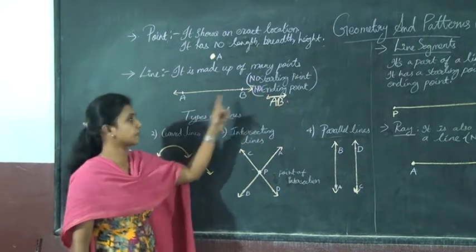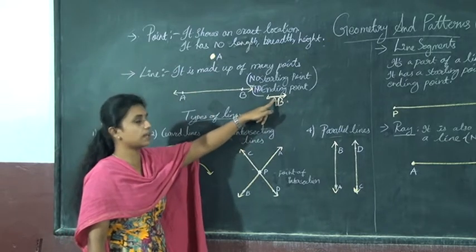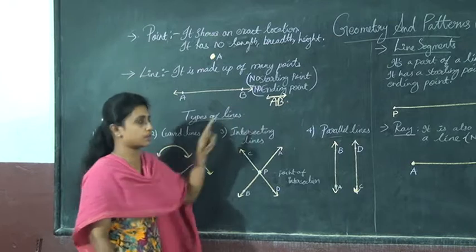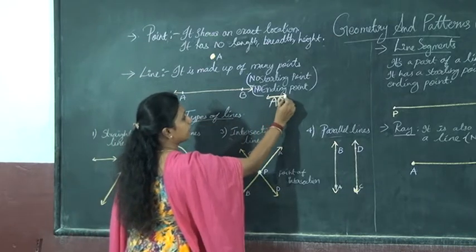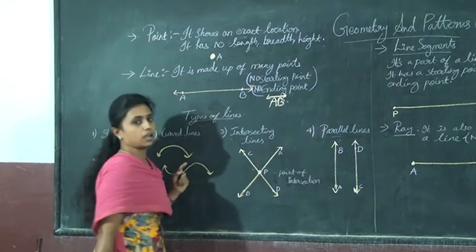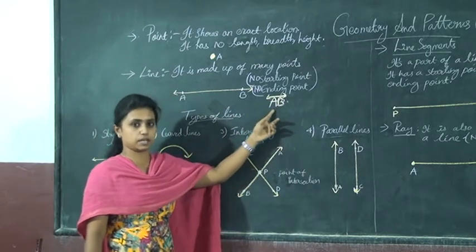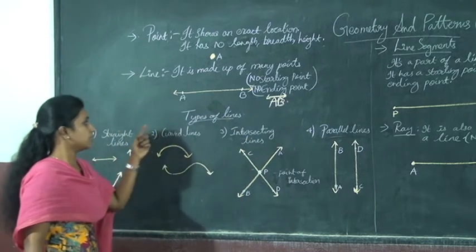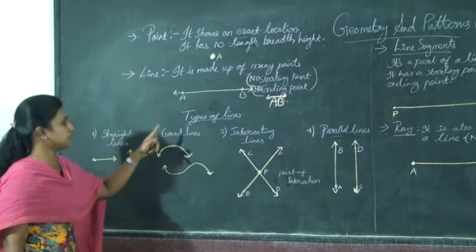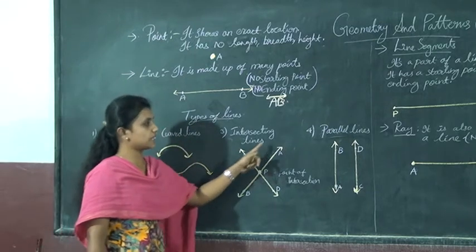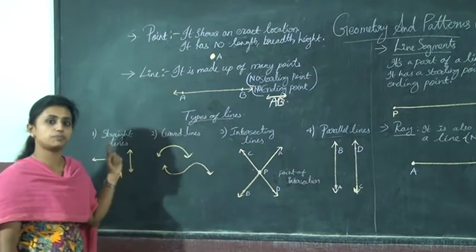A line continues in both directions. If you want to draw a line, you draw it with two-sided arrows. There are different types of lines: straight lines, curved lines, intersecting lines and parallel lines.